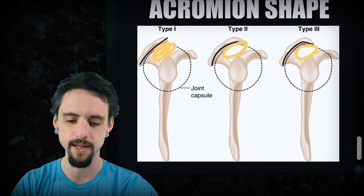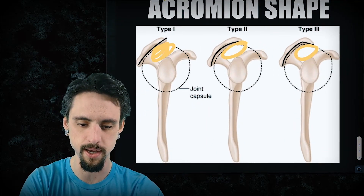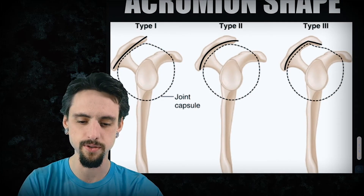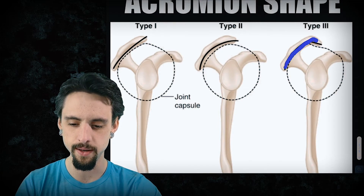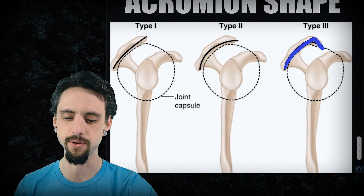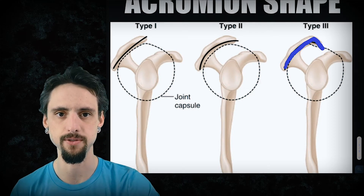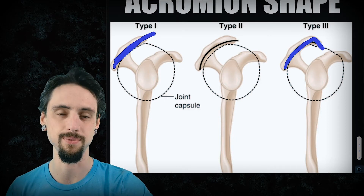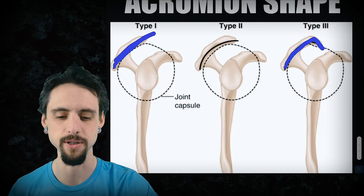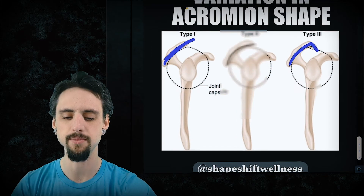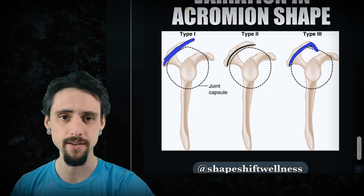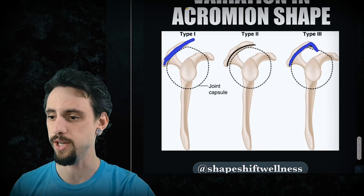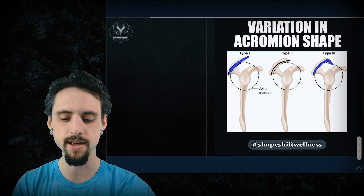You wouldn't expect a person who's got a bone that goes over and then literally hooks down into that subacromial space to be able to have the same type of overhead shoulder range of motion as a person without a hook into their acromial space. So you wouldn't expect them to move the same, and you wouldn't correct their alignment in the same fashion either. This is a common variation when teaching movement.